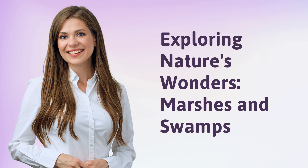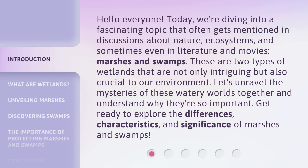Exploring Nature's Wonders: Marshes and Swamps. Hello everyone, today we're diving into a fascinating topic that often gets mentioned in discussions about nature, ecosystems, and sometimes even in literature and movies — marshes and swamps. These are two types of wetlands that are not only intriguing but also crucial to our environment. Let's unravel the mysteries of these watery worlds together and understand why they're so important. Get ready to explore the differences, characteristics, and significance of marshes and swamps.